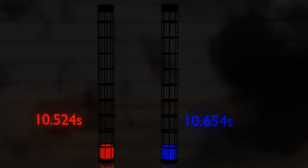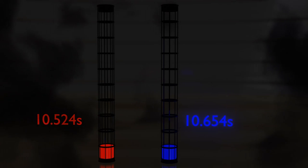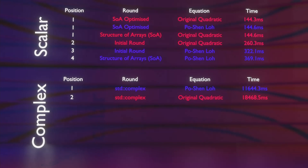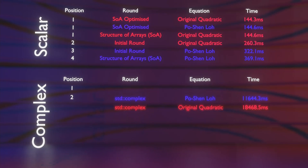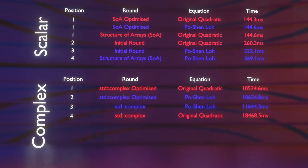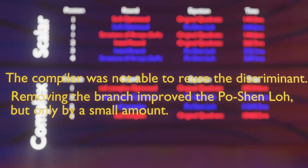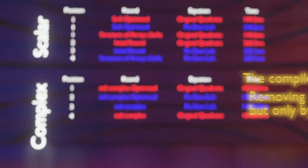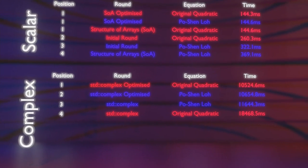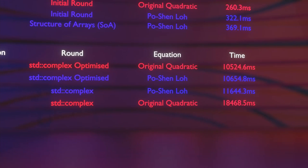It's a close one — we go to standard deviations. Red wins: the original quadratic takes the round. Times were 10.5 seconds for the original quadratic versus 10.6 for the Po Shen Lo. That indicates the original quadratic was not reusing the discriminant with std::complex, so coding it explicitly yields a big speed gain. The Po Shen Lo sped up slightly by removing the branch, but not dramatically. In this case, the original quadratic was faster by more than one standard deviation.